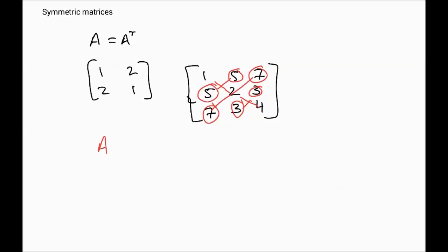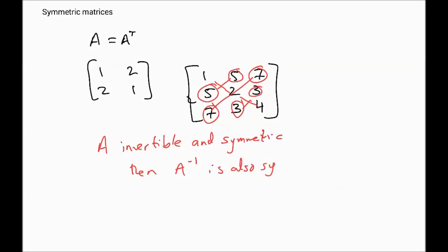A useful property: if A is an invertible symmetric matrix, then A inverse is also symmetric. That's a useful property to keep in mind, and that covers all the matrix properties we wished to cover.